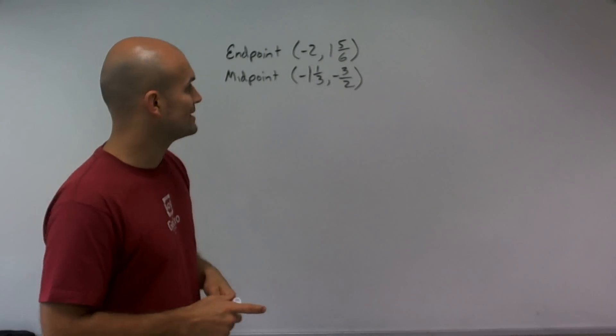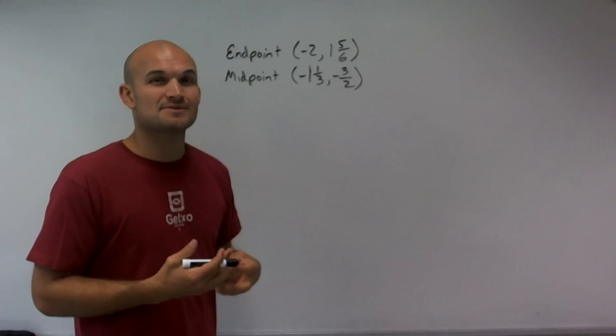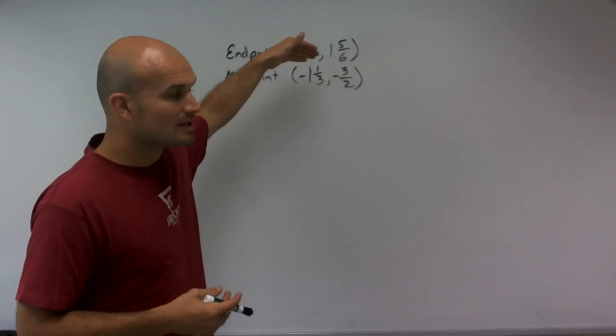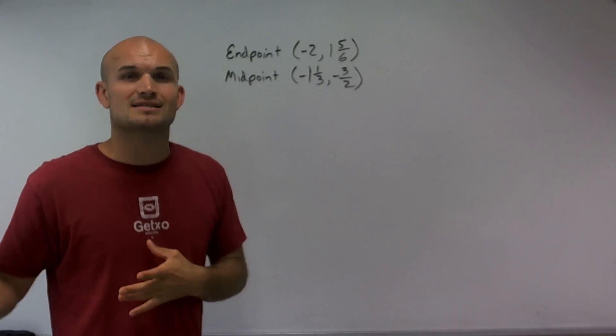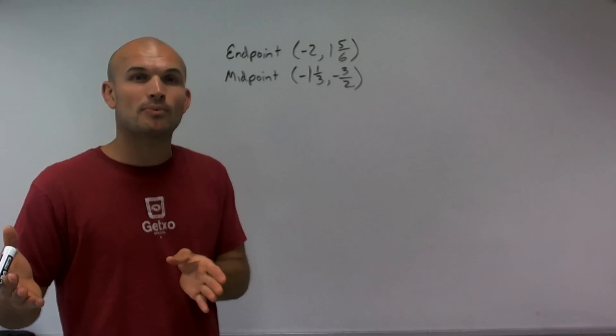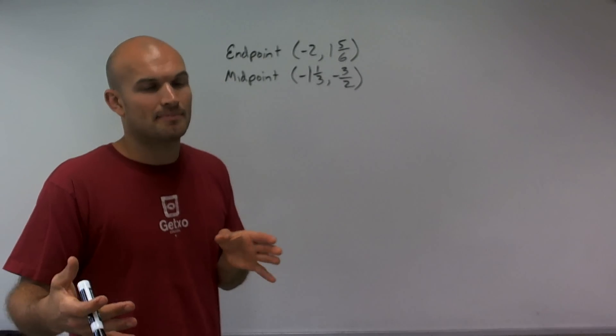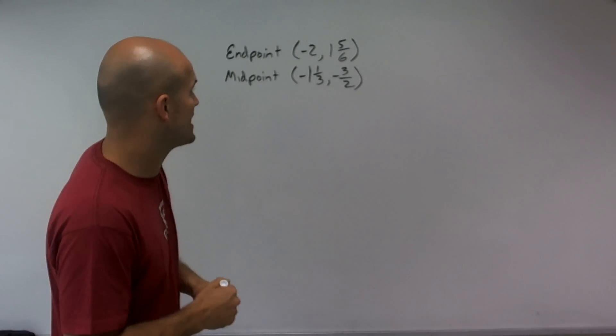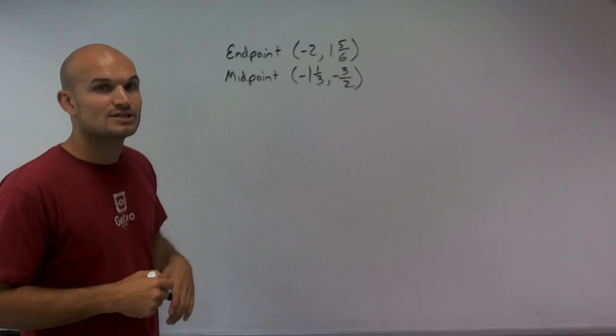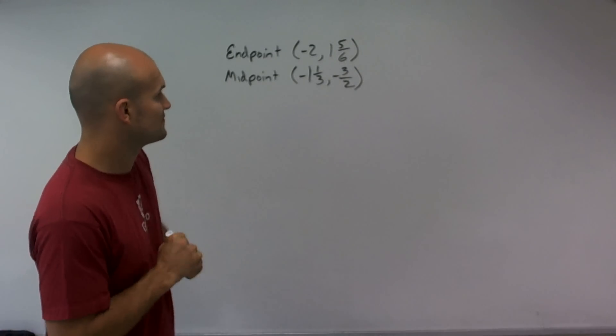I don't want to convert to decimal because that means I might start approximating depending on my decimal point or how much I approximate the numbers, and I could start getting answers that are not going to be exactly accurate. So I'm going to want to convert these to improper fractions first.